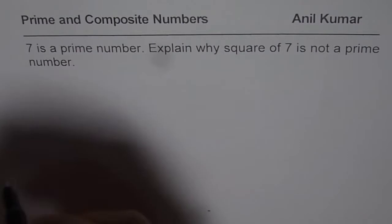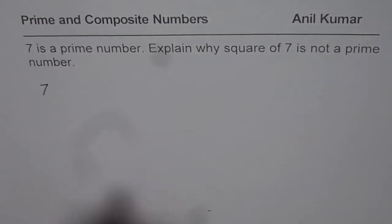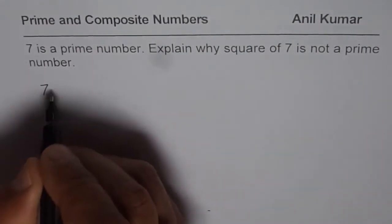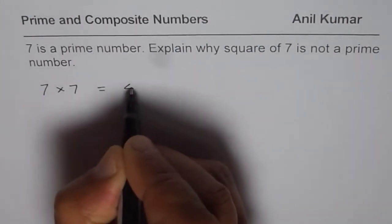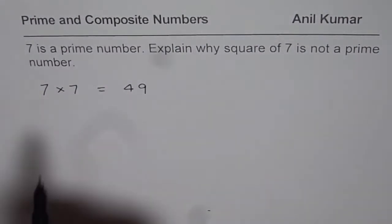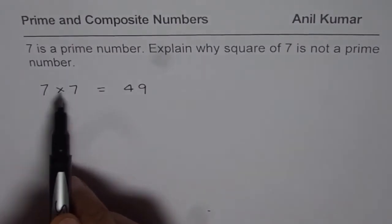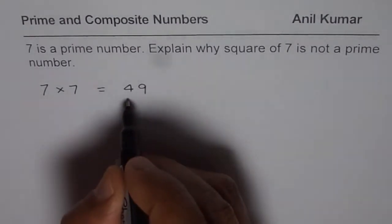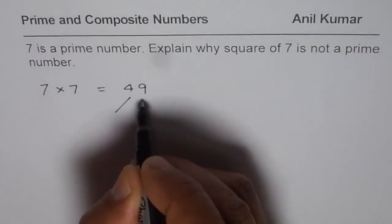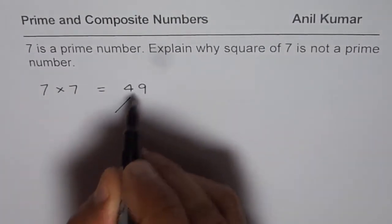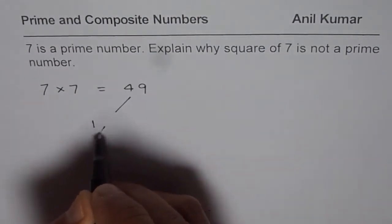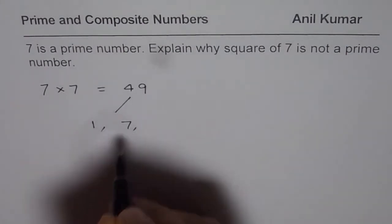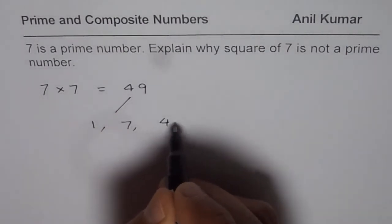We know 7 is a prime number. Square of 7 means 7 times 7, which is 49. When you multiply 7 by itself, you get a number whose factors are 1, 7, and the number itself, 49.